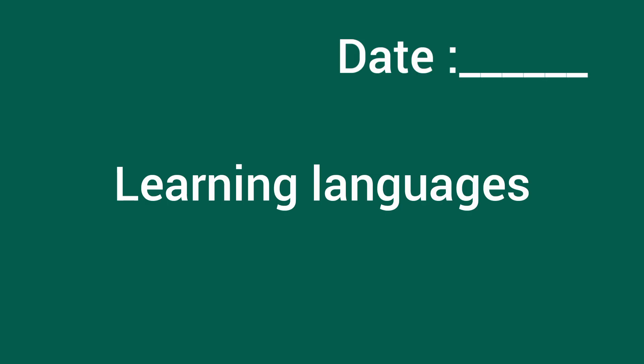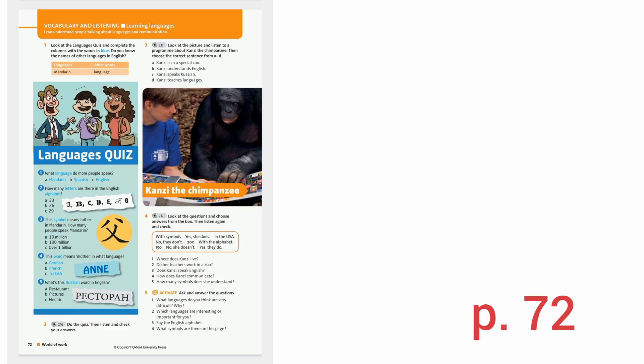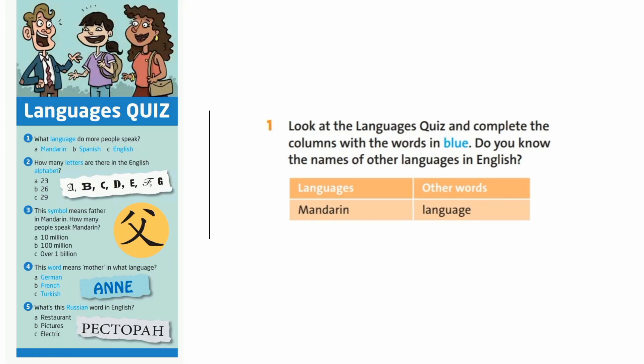Open your copybook please and write down today's date and the theme of our lesson: learning languages. Now you should open your student's book at page number 72. Look at the languages quiz and complete the columns with the words in blue. Do you know the names of other languages in English?